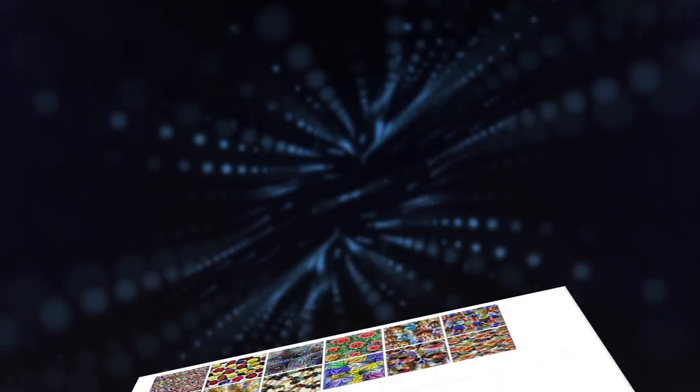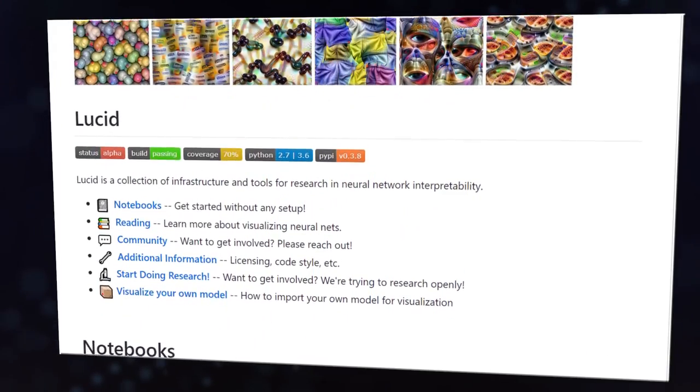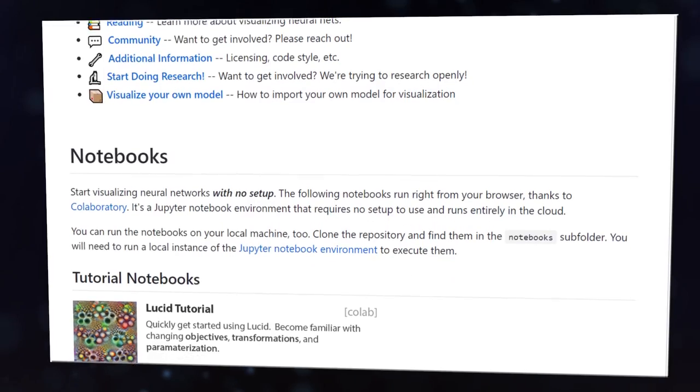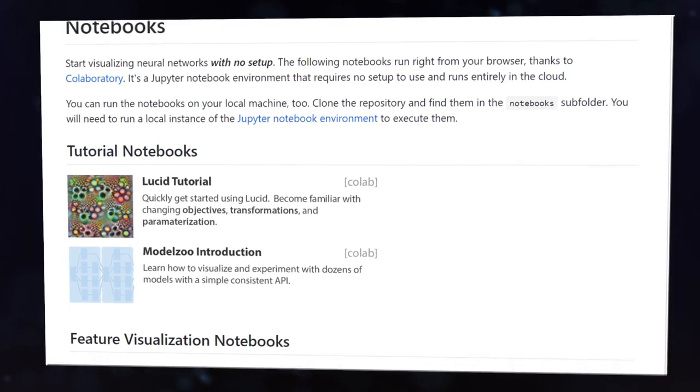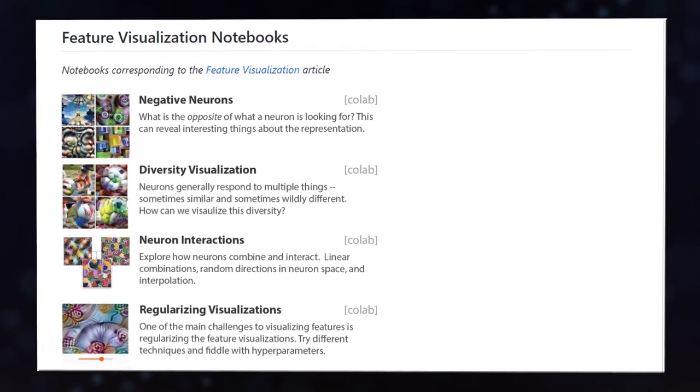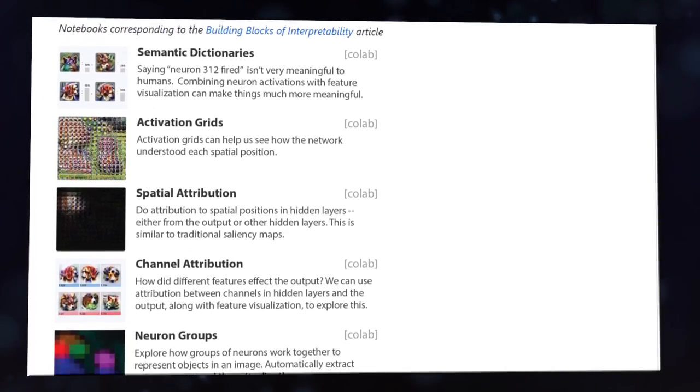The way that they implemented this is by using a really pretty library called Lucid by the creators of Distill. It allows for some cool transformations. With Lucid, you can visualize all the learned features inside of a neural network and implement various style transfer applications, one of the best documented GitHub repositories I've ever seen. Definitely check it out.